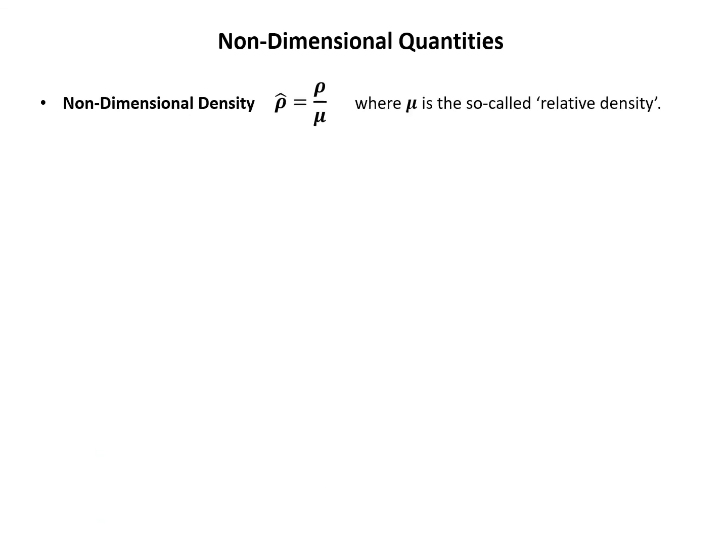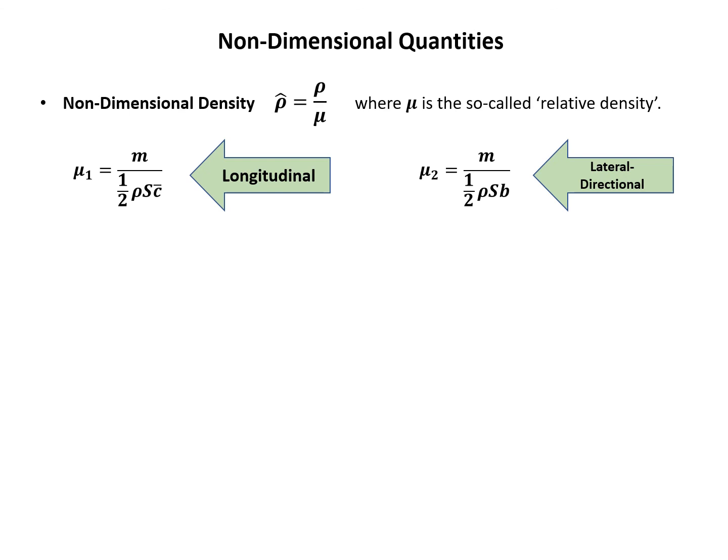The last two non-dimensional quantities shown here are the non-dimensional density, where the denominator μ is called the relative density. We have two relative densities: μ1 and μ2. μ1 has c̄ as the characteristic length, while μ2 has b as the characteristic length. As established in the previous examples, μ1 is used for longitudinal non-dimensionalization, and μ2 is the relative density used for lateral-directional analysis.